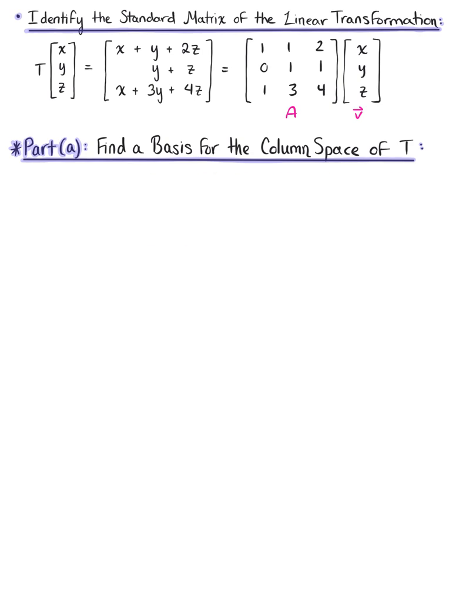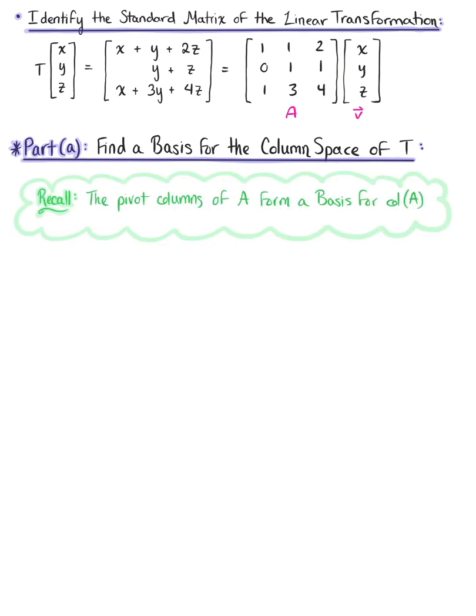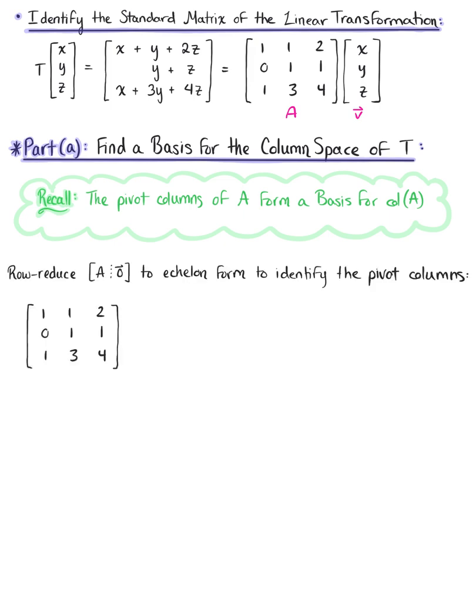Now we know that the pivot columns of a matrix form a basis for the column space of that matrix. So in order to find this basis, we are going to row reduce matrix A, augmented with the zero vector, to echelon form to identify the pivot columns.